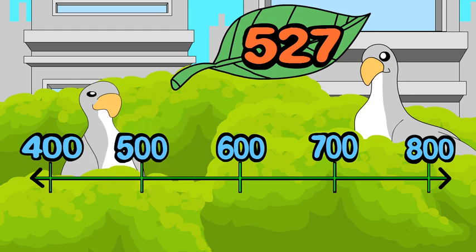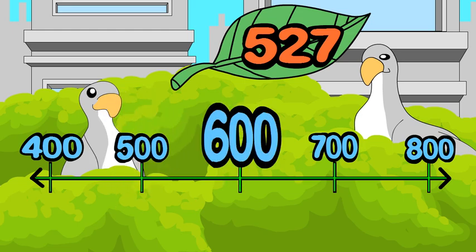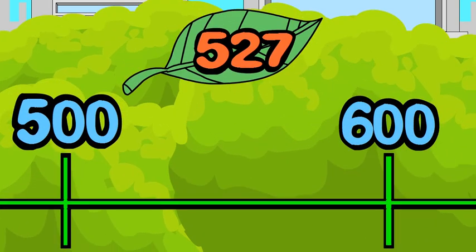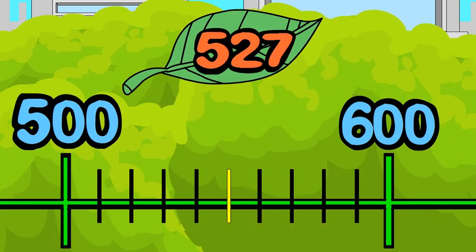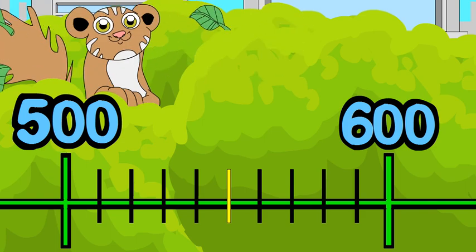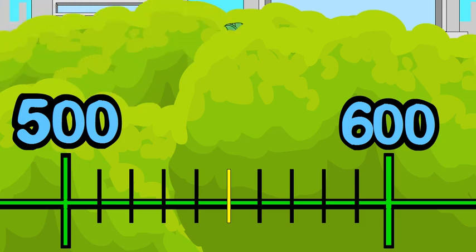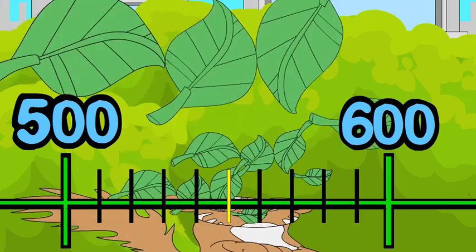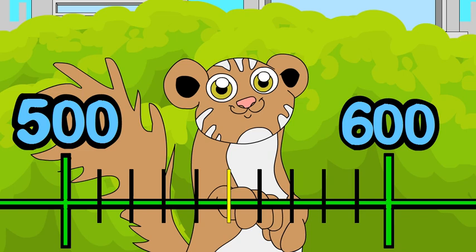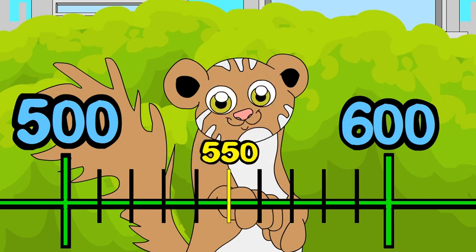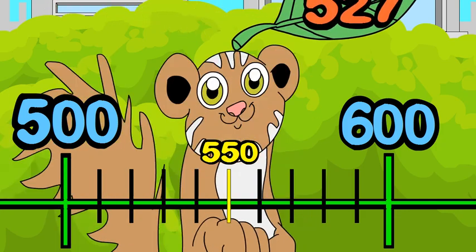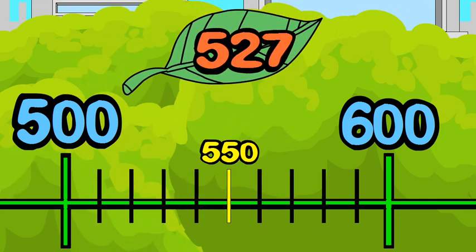500 is the lower benchmark and 600 is the higher benchmark. Now you can set up a number line and mark your benchmarks. Step two: find the midpoint between 500 and 600 — that's the number that is exactly in the middle. The midpoint is 550.